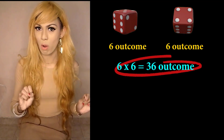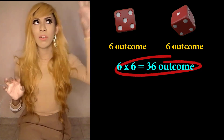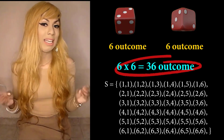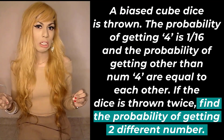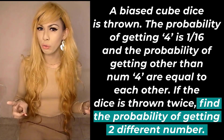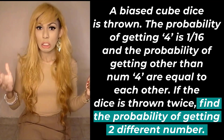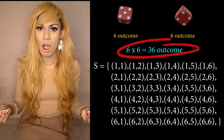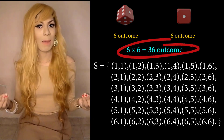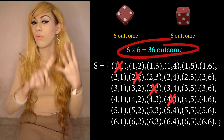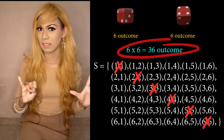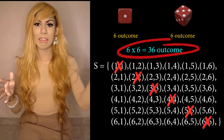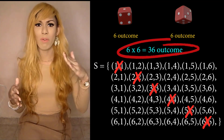We have 36 possible outcomes, all the way from one-one until six-six. The question asks us to find the probability of getting two different numbers. Looking at all 36 possible outcomes, most of them are different numbers — except for one-one, two-two, three-three, four-four, five-five, and six-six.